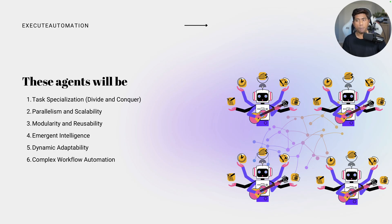These kinds of systems are pretty much like RPA systems, but they are far more intelligent than RPA in a nutshell. That's the power of the agentic multi-agent system.